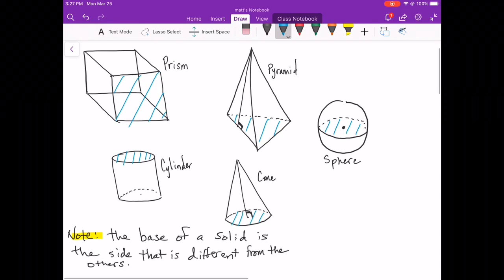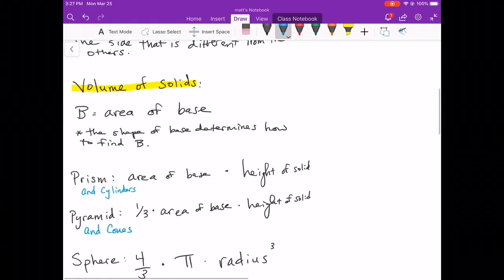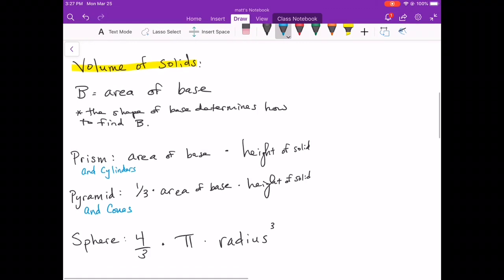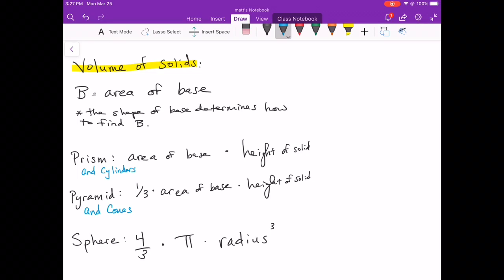A quick review of the volume of solids. This big B here, this uppercase B you'll often see in formulas and it represents the area of the base. So the shape of the base, whether it's a rectangle, a triangle, trapezoid, a circle, the shape of the base determines how you find the area of the base, so those area formulas is what you're going to have to reference to find the area of the base. So if the shape of the base is a square then you would use the formula for area of a square. If the shape of the base is a circle you would find the area of a circle using the pi r squared area formula for a circle.